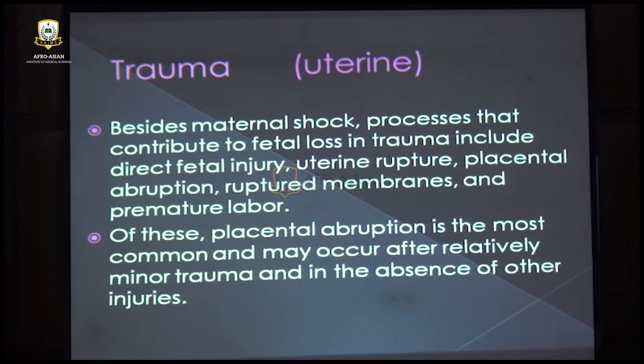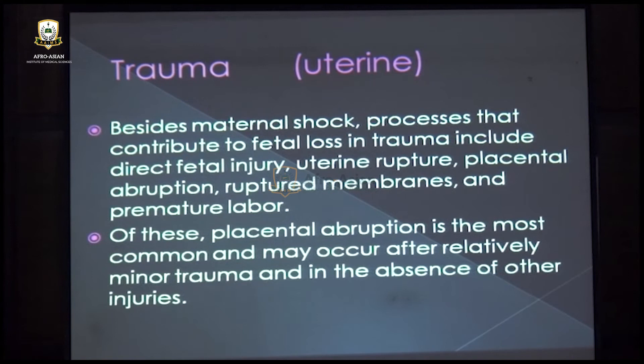Trauma to the mother may cause shock as well as vaginal bleeding, producing direct trauma to the fetus. There may be abruption placenta or ruptured membranes causing vaginal bleeding. On ultrasound examination you will see loss of amniotic fluid and blood within the cervix. So trauma is also a cause of vaginal bleeding in pregnancy.